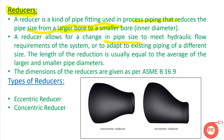In process industries, when different branch tappings are taken from the main pipe, we sometimes need to change pipe size. To join a smaller pipe size with a larger pipe size, a reducer is used. The length of a reducer is generally equal to the average of the larger and smaller pipe diameters, and reducer dimensions are specified per ASME B16.9.